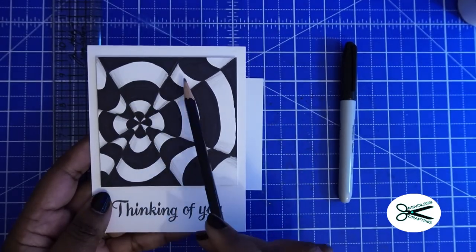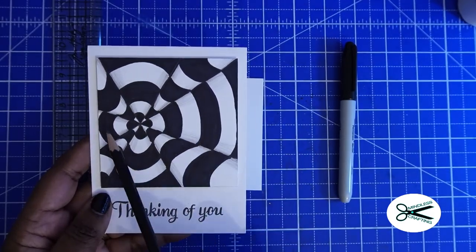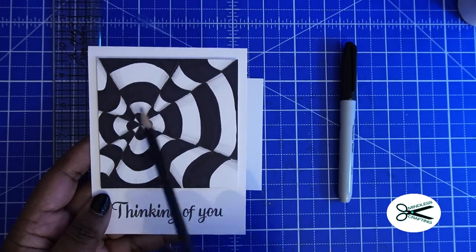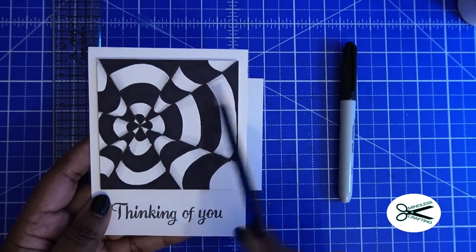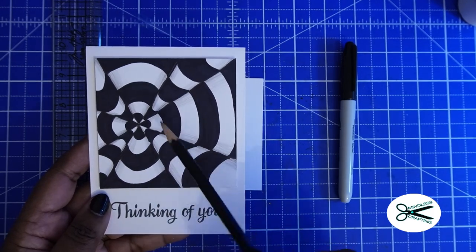And then if you look at this, it has one, two, three, four, five, six, seven, eight rectangular-like shapes to make that circus tent effect. All right?